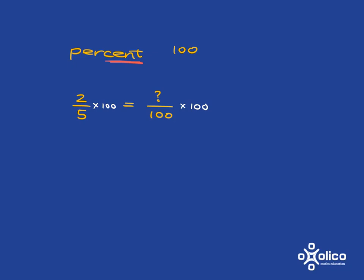So the method is as follows: if you want to turn two-fifths into a percentage, you're going to multiply it by a hundred. Then what you will get is—two-fifths multiplied by a hundred—five cancels with a hundred and you get twenty, so you're going to get two times twenty, which is forty percent.